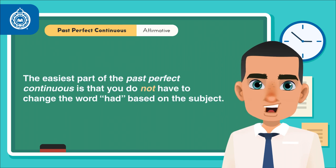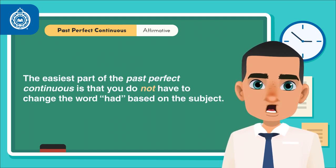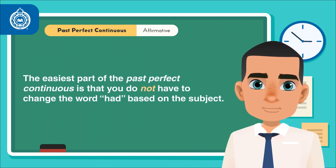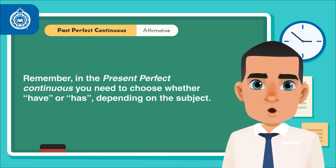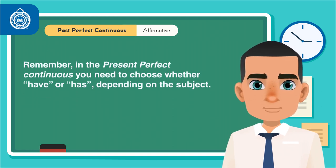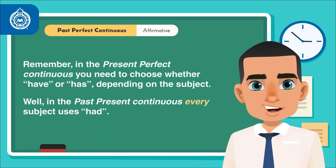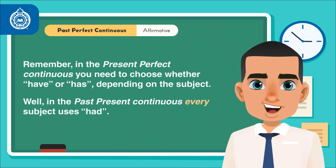The easiest part of the past perfect continuous is that you do not have to change the word had based on the subject. Remember, in the present perfect continuous, you need to choose whether have or has, depending on the subject. Well, in the past perfect continuous, every subject uses had.